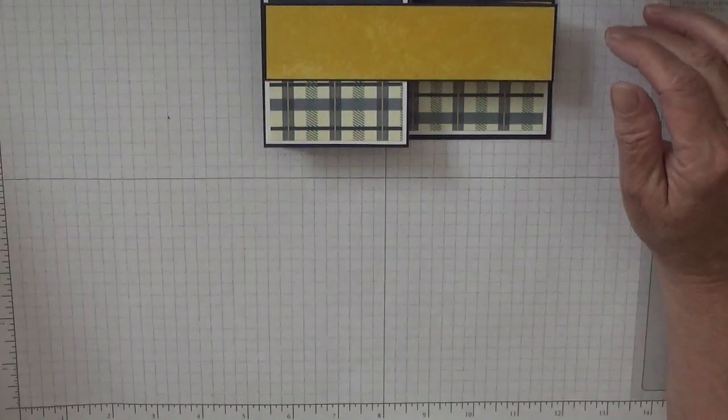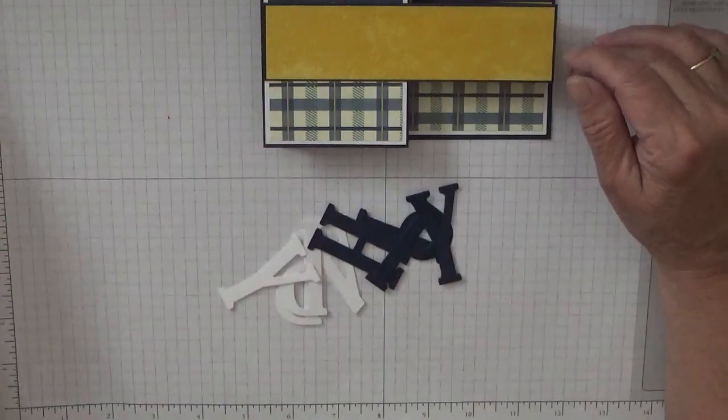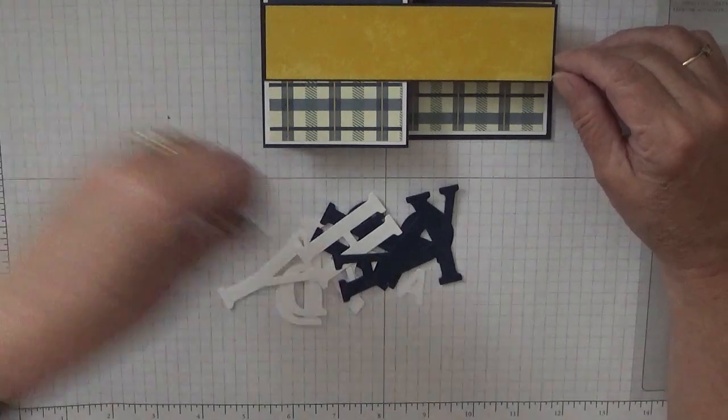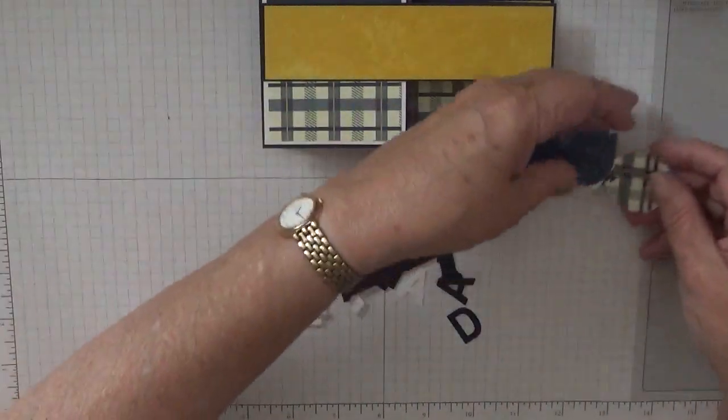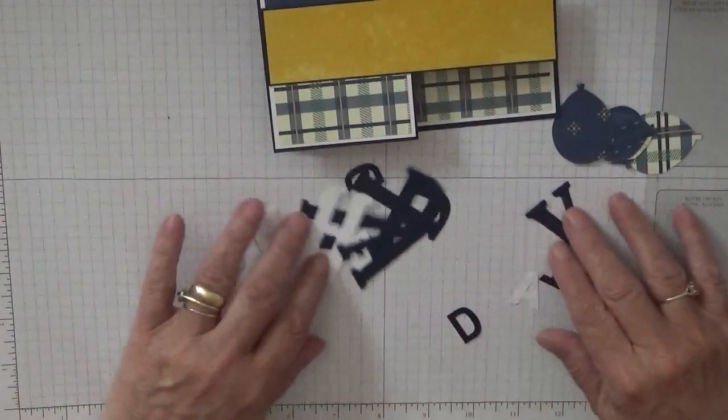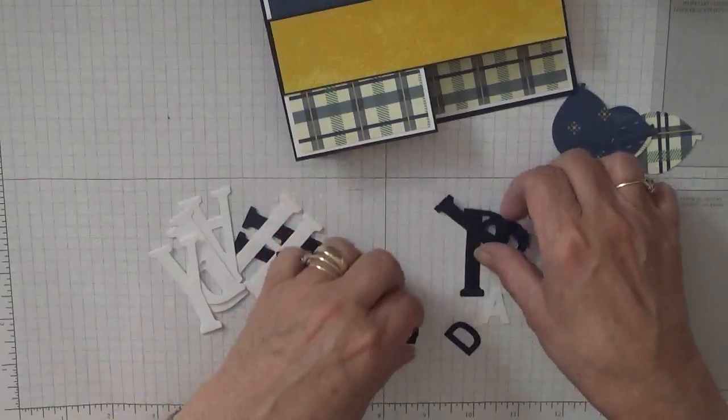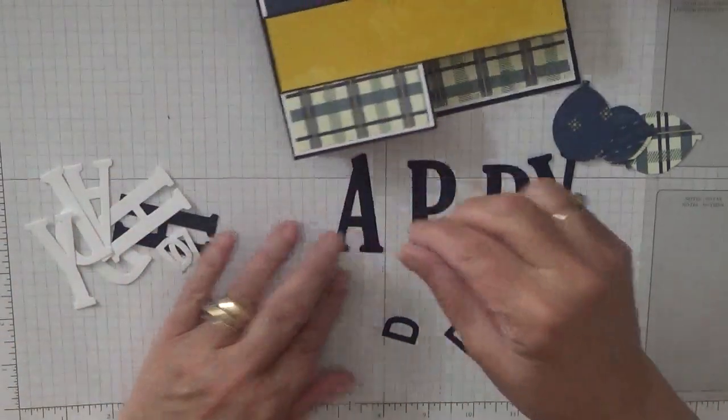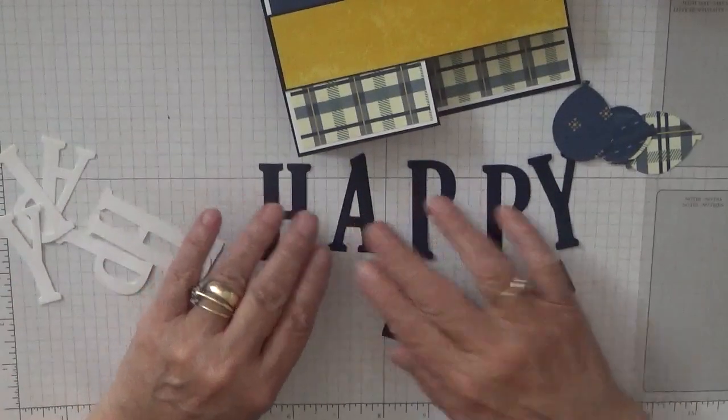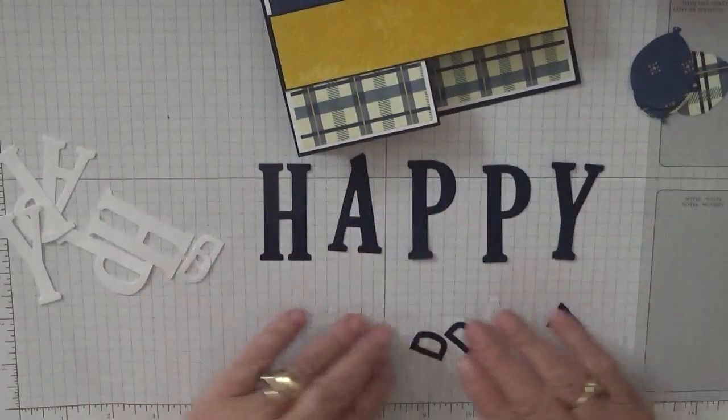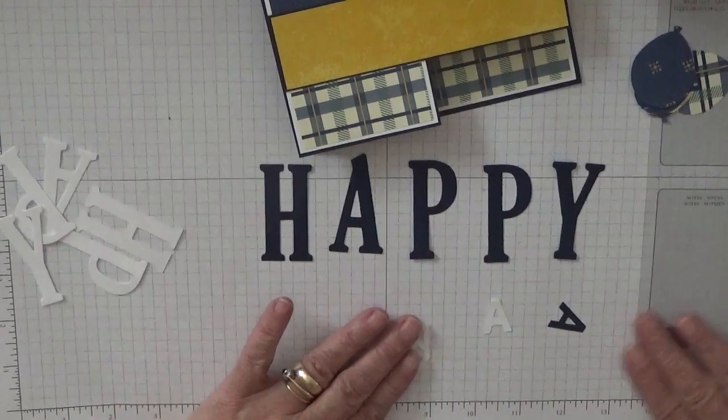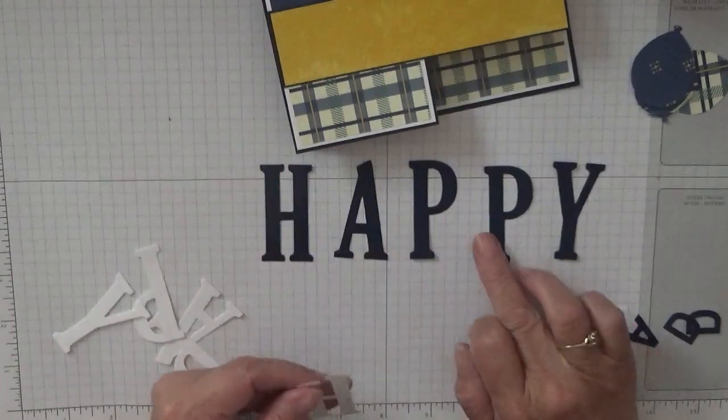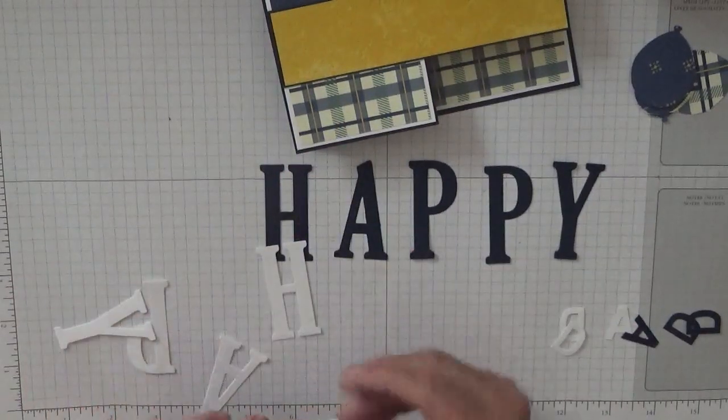For the decorations I have cut out lots of letters and I've punched out some balloons. Now with the letters, let's get them all out of the way. I have die cut out, these are from Stampin' Up's large letter dies. I've die cut out the word happy in Night of Navy and also in white.